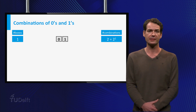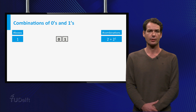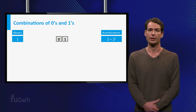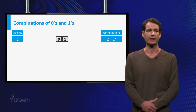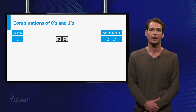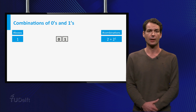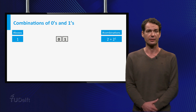Here we represent a bit by a box, which can contain a 1 or a 0, so with one box we can make two combinations. By combining boxes, we can make more combinations.